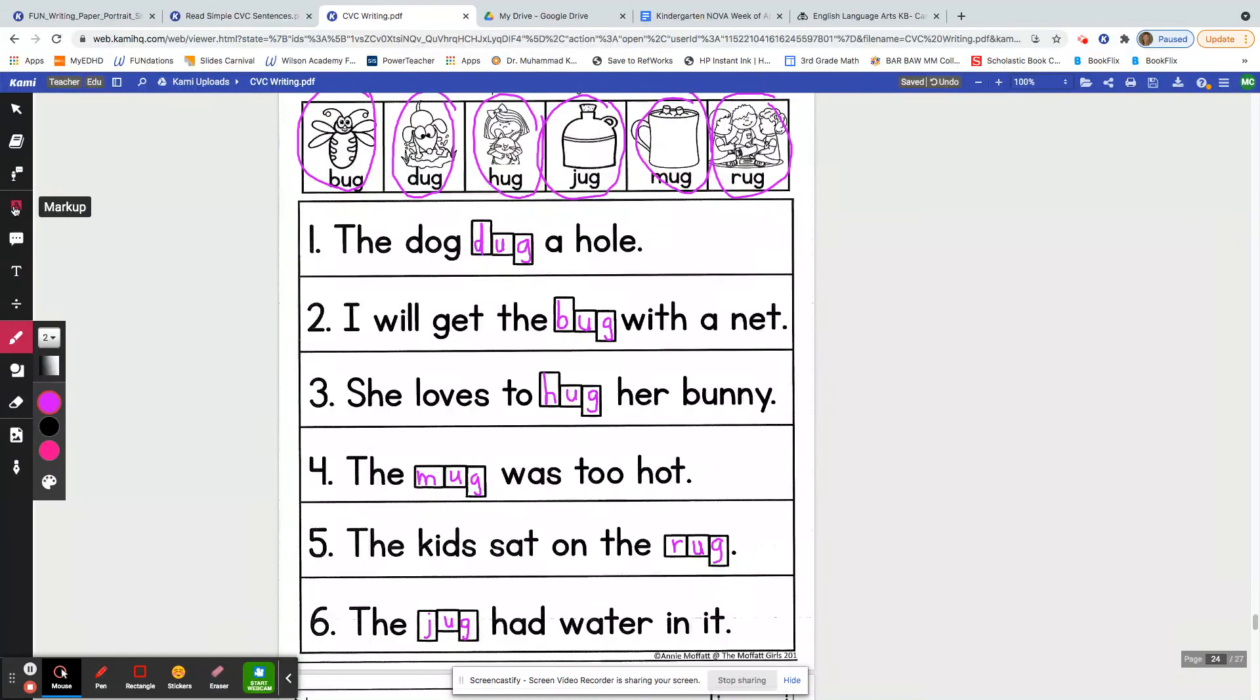So for example, or if you have maybe even a highlighter or a marker, you could highlight all the sight words that you knew. Maybe you knew the word the and the word a, the word I and the word the. Maybe you knew all these words, and then you also knew the word to.